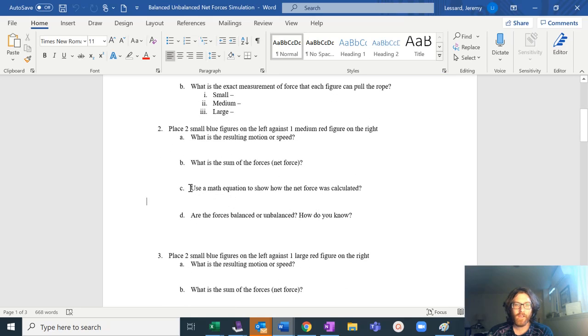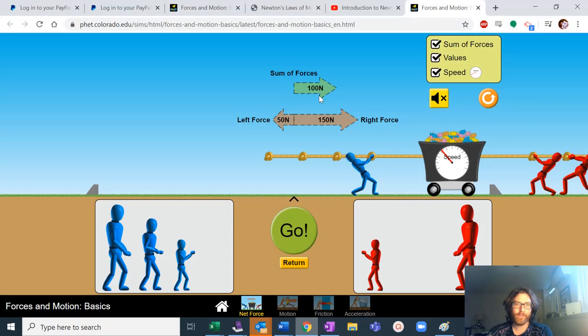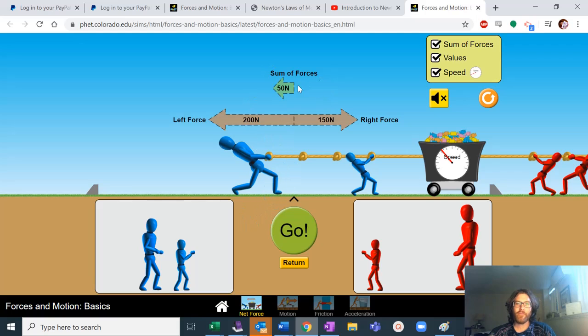So when I say use a math equation to show how the net force is calculated, I want to just give you a quick hint as to that. The sum of the forces is 150 left versus right. You can make this an addition or a subtraction sort of equation to get the sum of the forces. So what I would think would be a good way to think about this would be to think about this like a number line where left is negative and right is positive. So the sum of the forces here would be positive 100 to the right. Rather than if I added a guy over here, we would have negative 50 to left because it's going to the left.